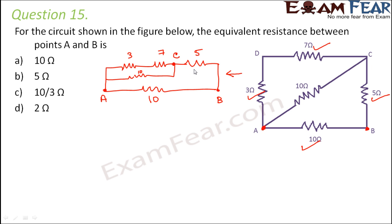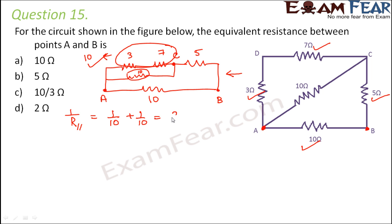When you draw this circuit in simplified form, it becomes very clear which resistors are in parallel and which are in series. You can see that 7 and 3 ohms are in series, giving 10 ohms. Now this 10 ohm and the other 10 ohm are in parallel: 1/R_parallel = 1/10 + 1/10 = 2/10, so R_parallel = 5 ohms. That means you can replace the 3, 7, and 10 ohm combination with a single 5 ohm resistor.